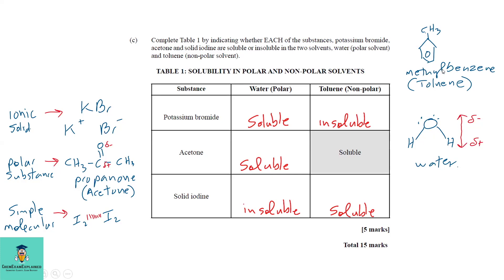Toluene has no charge to pull ions apart from an ionic compound. Potassium bromide is an ionic solid: in water, the negative part of water surrounds the positive ion and the positive part surrounds the negative ion, pulling them apart — so ionic solids dissolve in water. In toluene, being non-polar, the solid is insoluble.